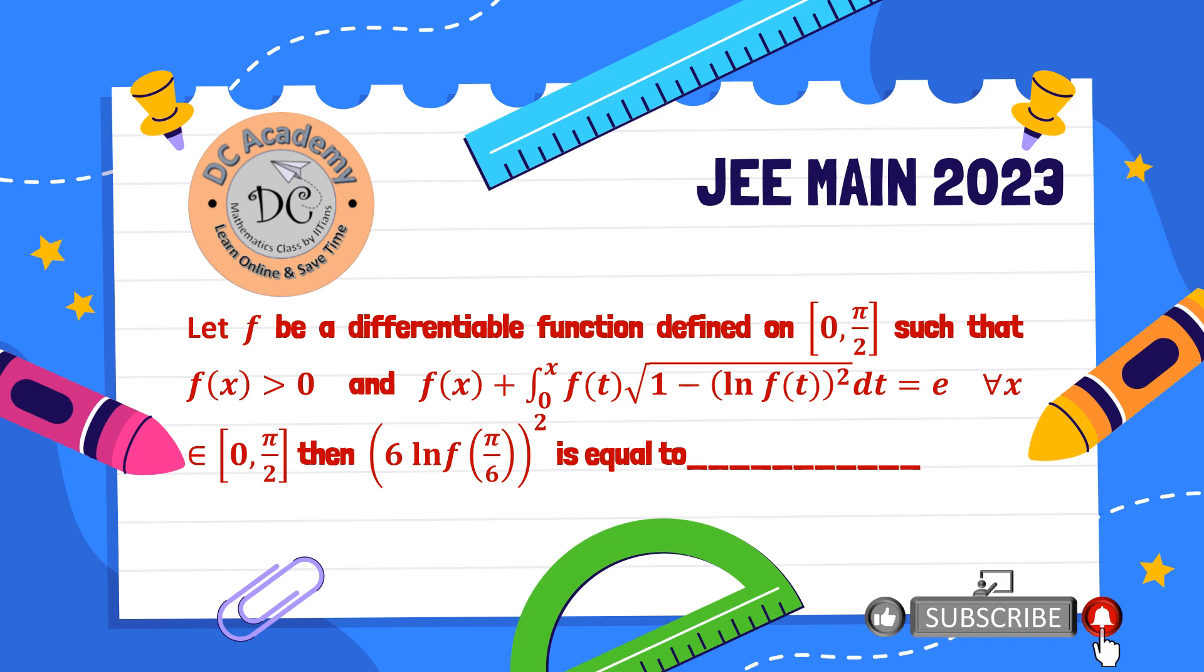Now we need to find the value of 6 ln(f(π/6)). So basically at the beginning we can guess that we need to find or evaluate the function f(x). Let's go ahead and solve this particular problem.